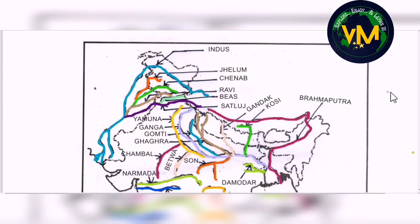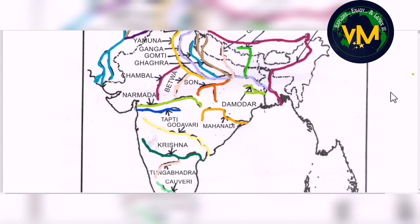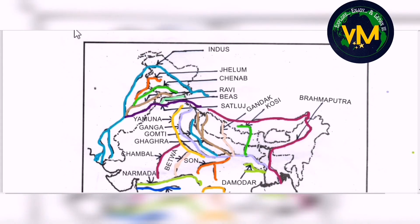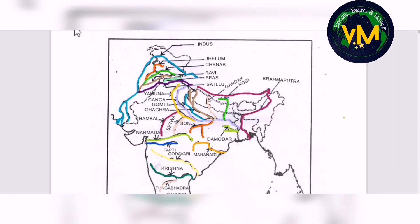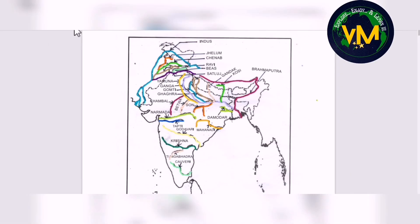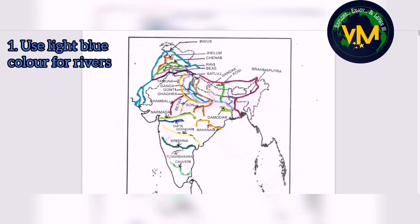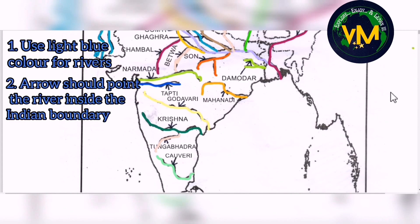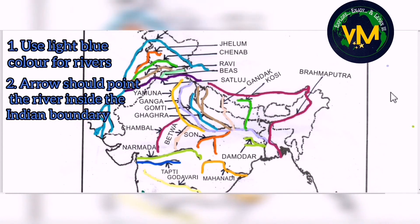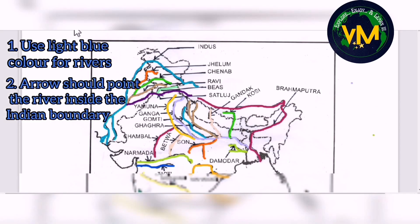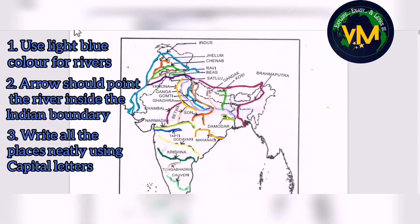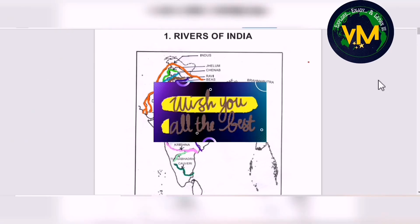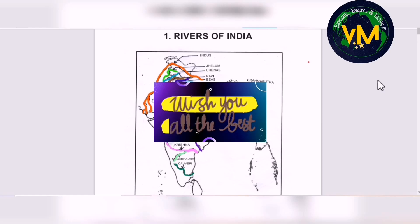So we have now learnt all 24 major rivers in India. For the board exam, when you mark these rivers, use only light blue colour pencil. The arrow should be inside the Indian boundary — do not mark it in China or Pakistan even though the river flows there. And try to write all the place names using capital letters so that it's neat and legible. All the very best for your examination. I hope you will be able to mark these rivers correctly.